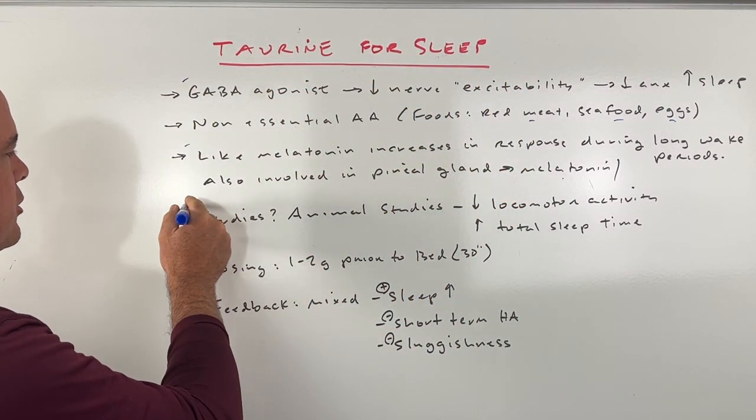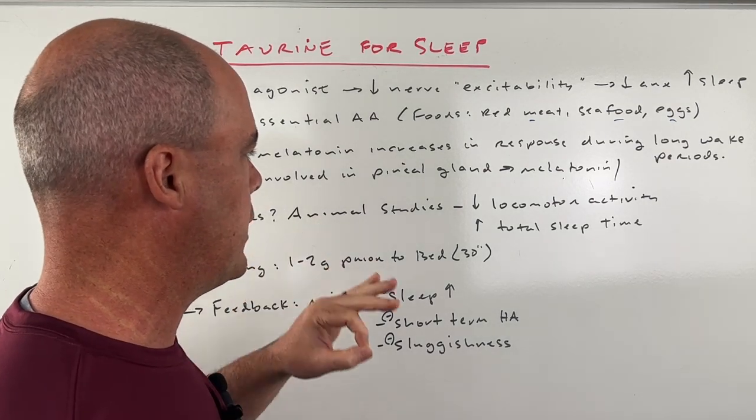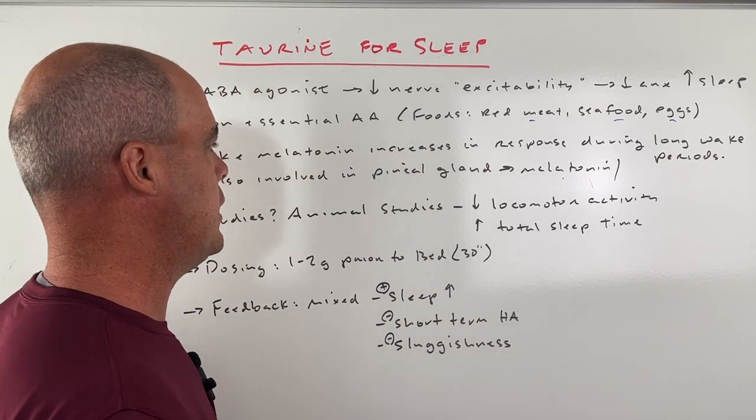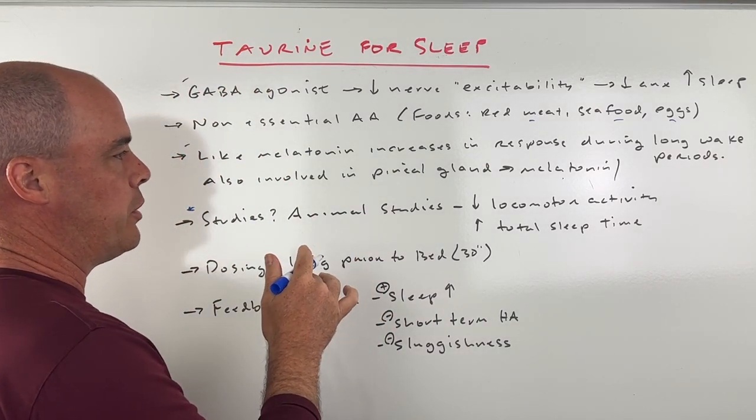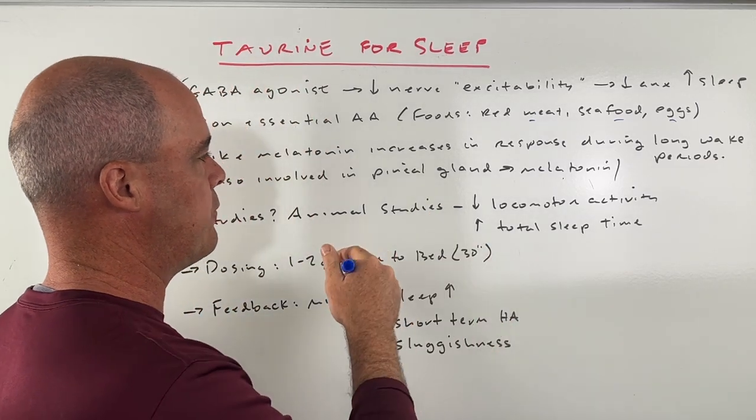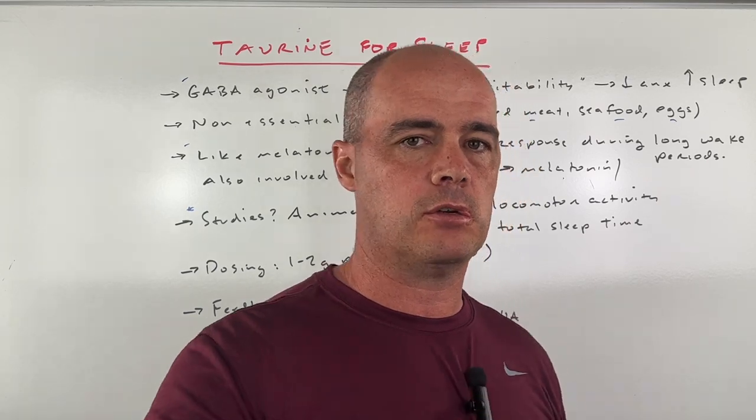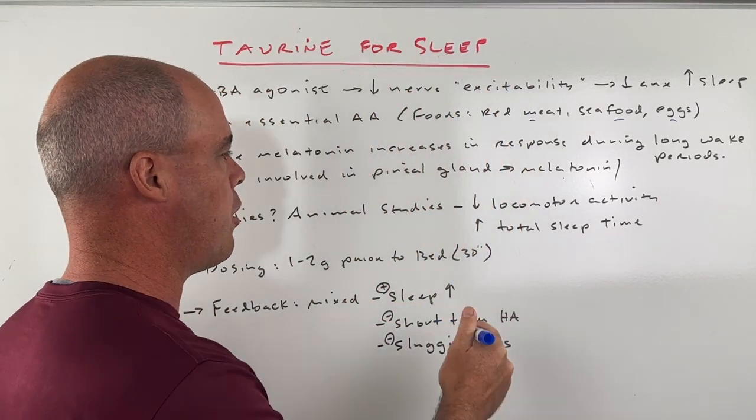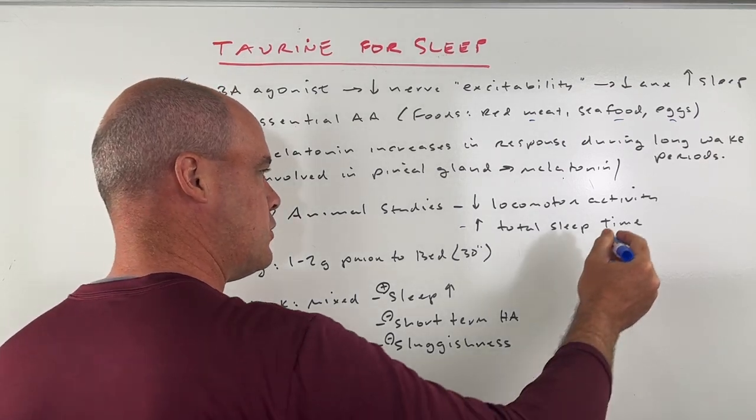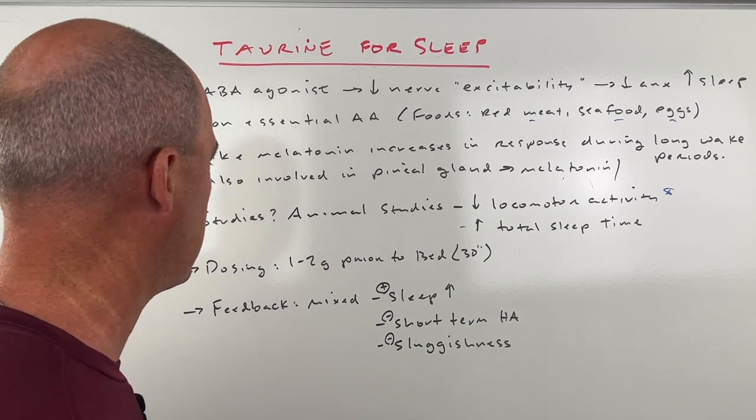Now, what do the studies actually show? Do we see any effectiveness with taurine? And again, I want to stress these are only animal studies or one animal study. They did give taurine versus caffeine. What they found is that when they gave them taurine, it caused a decrease in locomotor activity, basically a decrease in activity overall. And they did see an increase in total sleep time. Now, this decrease in locomotor activity is going to be important here in a second.